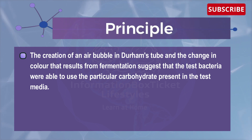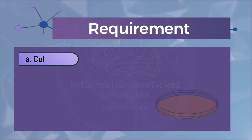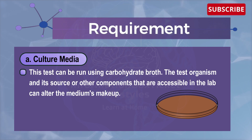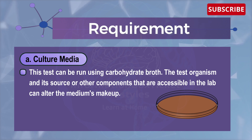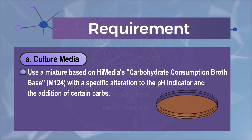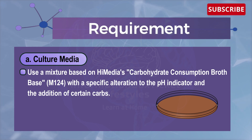The creation of an air bubble in the Durham tube and the change in color resulting from fermentation indicates that the test bacteria were able to use the particular carbohydrate present in the test media. Let's learn the requirements for the carbohydrate fermentation test. The first requirement is culture media. This test can be run using carbohydrate broth. The test organism and other components accessible in the lab can alter the medium's makeup.